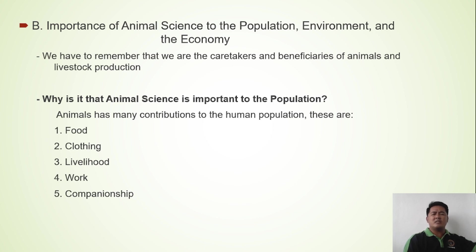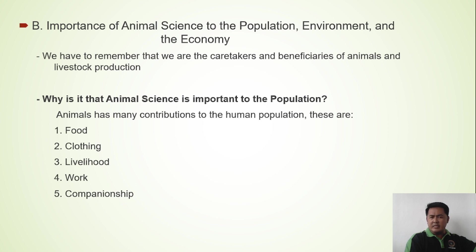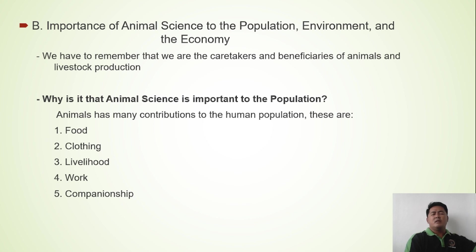Why is animal science important to the population? Animals have many contributions to the human population. Number one is food. Next is clothing. Next is livelihood, work, and companionship. These are the contributions of animals to humans.